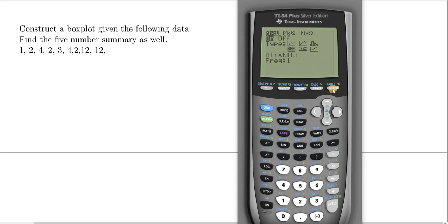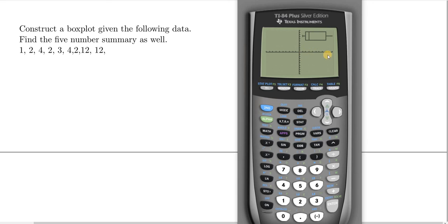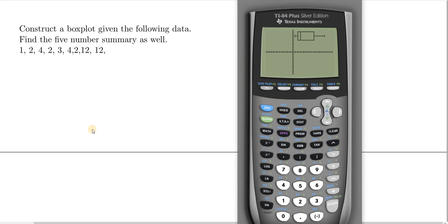All you do now is press the GRAPH button and there is our box plot. If your window doesn't look right, you can go to ZOOM and press 6 then Enter, and yours might look cut off. To fix this, go to WINDOW and make your X max a little bit bigger — since the biggest number we have is 12, make it about 15. Then press GRAPH and you get a better picture.